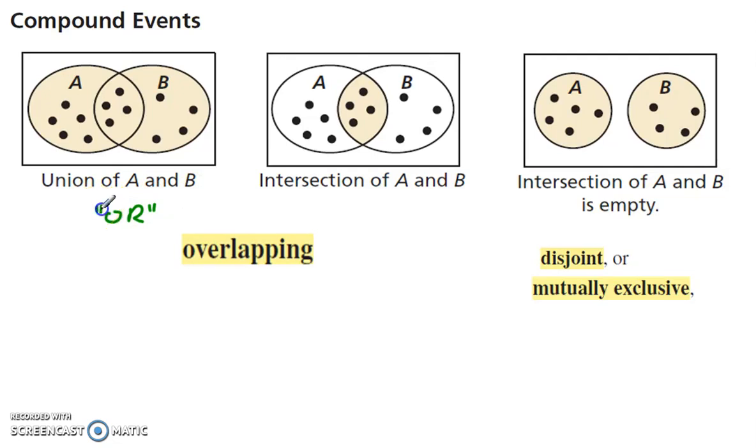The union is or, the intersection is both of it has to be fulfilled, that's the and. The intersection is and, the union is or, it could be this or that. And then, the intersection, this is also an or, but this is in a disjoint or mutually exclusive.